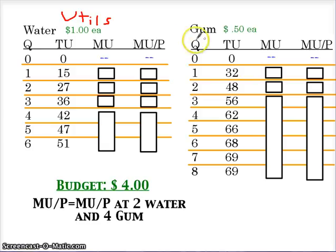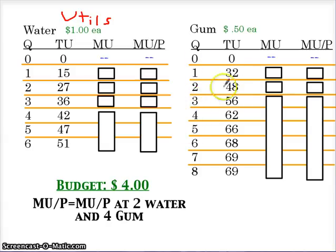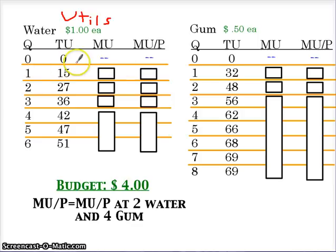Total utility goes up as consumption increases. It can eventually equalize — if you look at gum, when we hit the seventh unit, we have 69 total utils, and the eighth unit is also 69, meaning we got no extra satisfaction from that eighth unit. Can total utility go negative? The total utility represents all satisfaction gained from each unit of consumption, and you can't reverse satisfaction already gained. So total utility can level out, but we won't really see it go negative. Marginal utility is a per-unit assessment — it measures the change in total utility as I change consumption.